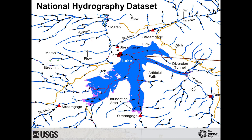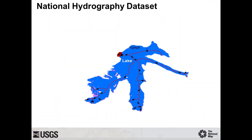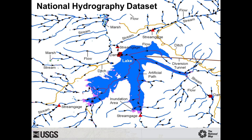NHD represents the nation's surface water drainage network and related features. These features include rivers and streams, canals, lakes and ponds, coastlines, dams, glaciers, and marshes. Note that lake features contain artificial flow path features, which permit hydronetwork connectivity to be maintained through water bodies. The NHD high resolution, at a 1:24,000 scale or better in some locations, is the most up-to-date and detailed hydrography dataset for the nation. This illustration shows NHD for an area in Colorado with many of the features labeled.